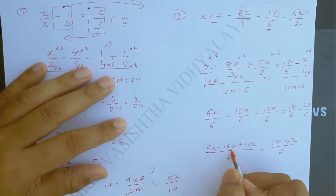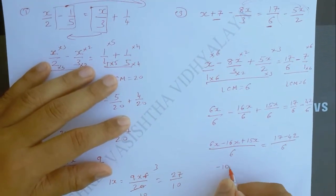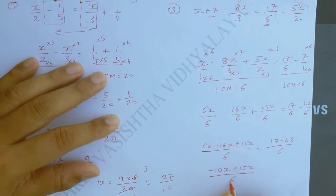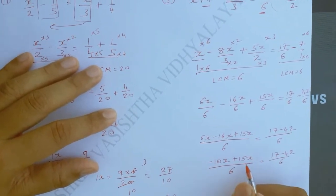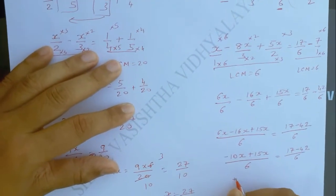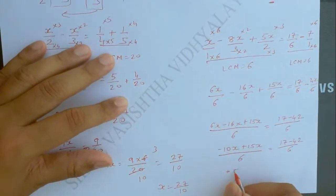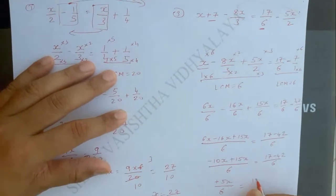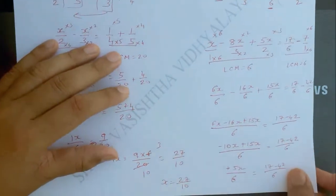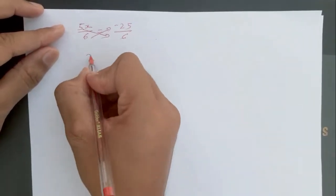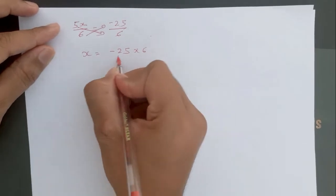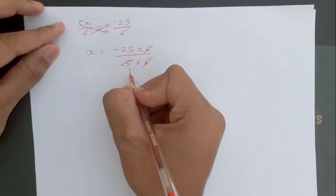Then 6x minus 16x will be minus 10x, plus 15x upon 6 is equal to 17 minus 42 upon 6. Here the bigger digit is 15, so the sign will be plus and 15 minus 10 will be 5x. So 5x upon 6 is equal to minus 25 by 6. Now we will transpose this 5 to the denominator and the 6 to the numerator. So x is equal to minus 25 multiply 6 upon 5 multiply 6. The 6s cancel out and 5 ones are 5, so x equals minus 5.